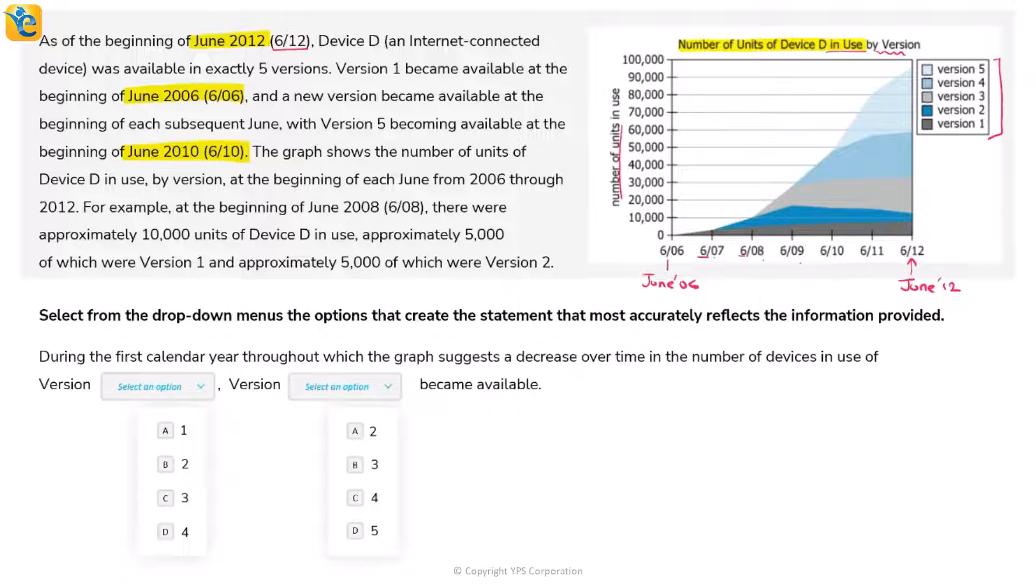As of the beginning of June 2012, Device D was available in five versions. Version 1 became available at the beginning of June 2006. On the legend, Version 1 is the gray section, and it starts from the first label on the x-axis. The place where a section starts is where that version became available.